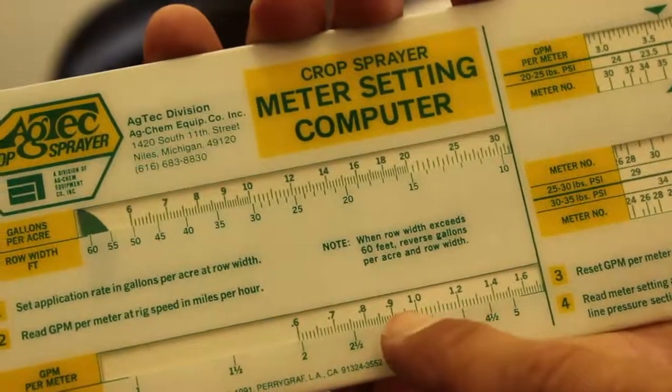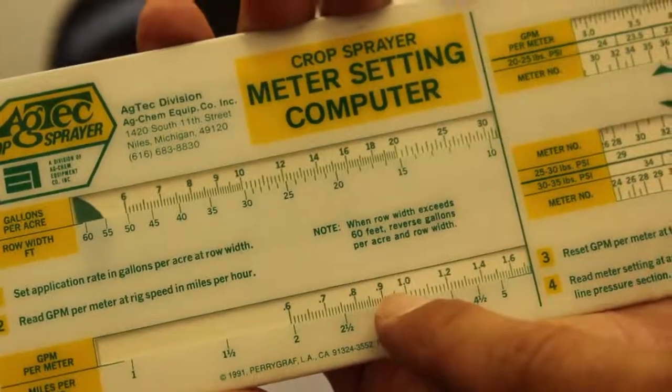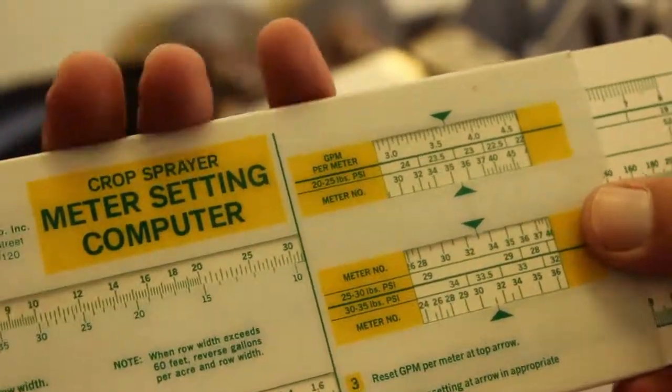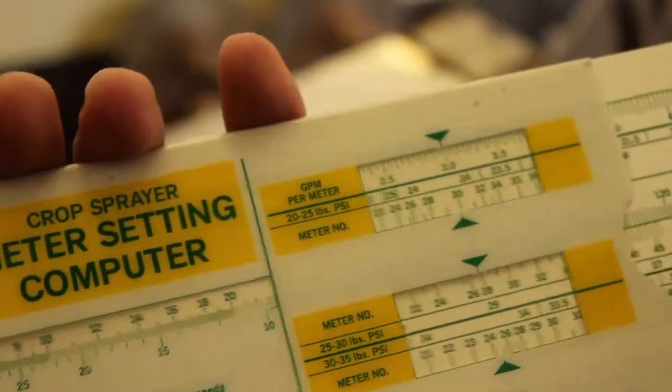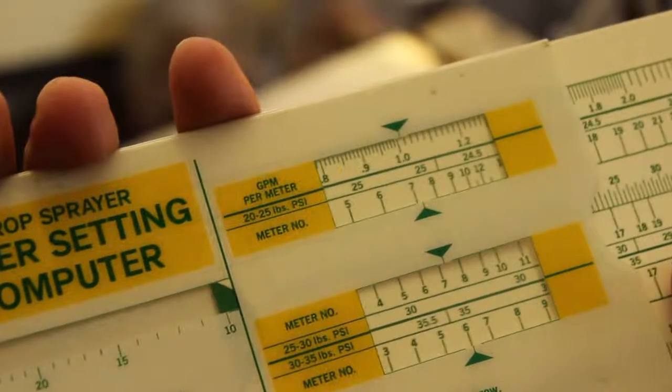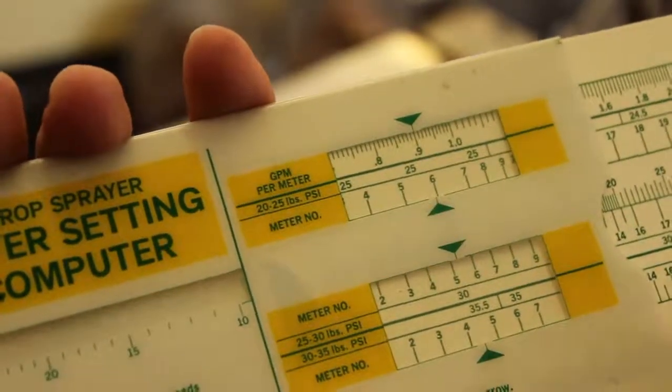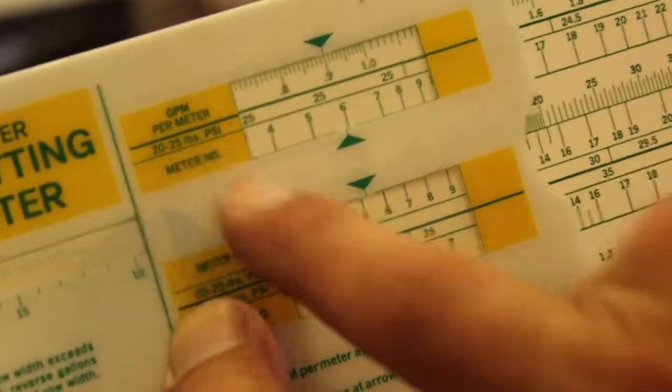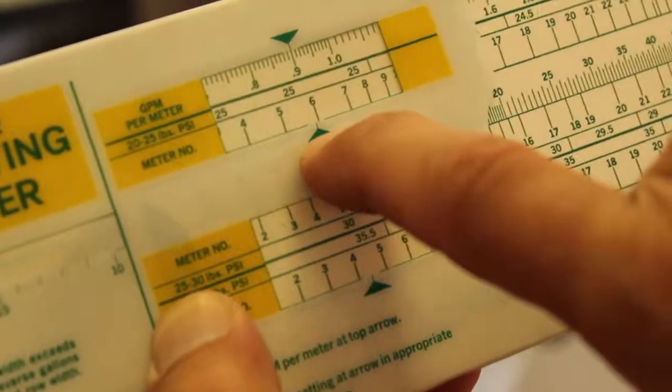So we take that .9 gallons per minute per meter up here, plug in .9. That gives us, at 20 to 25 pounds of pressure, 6 on the meter.